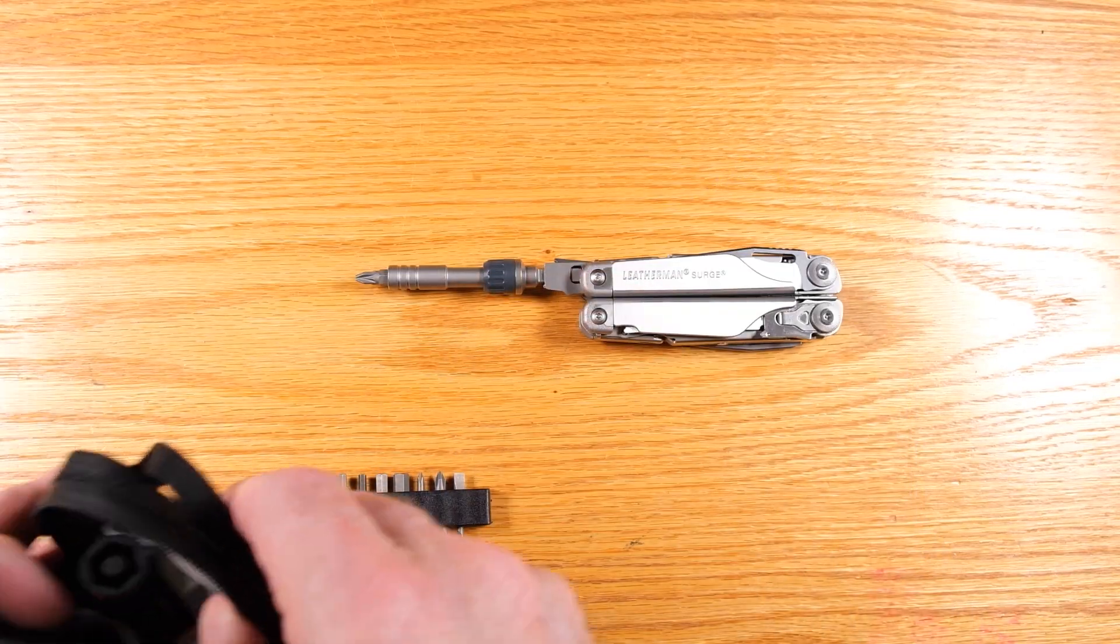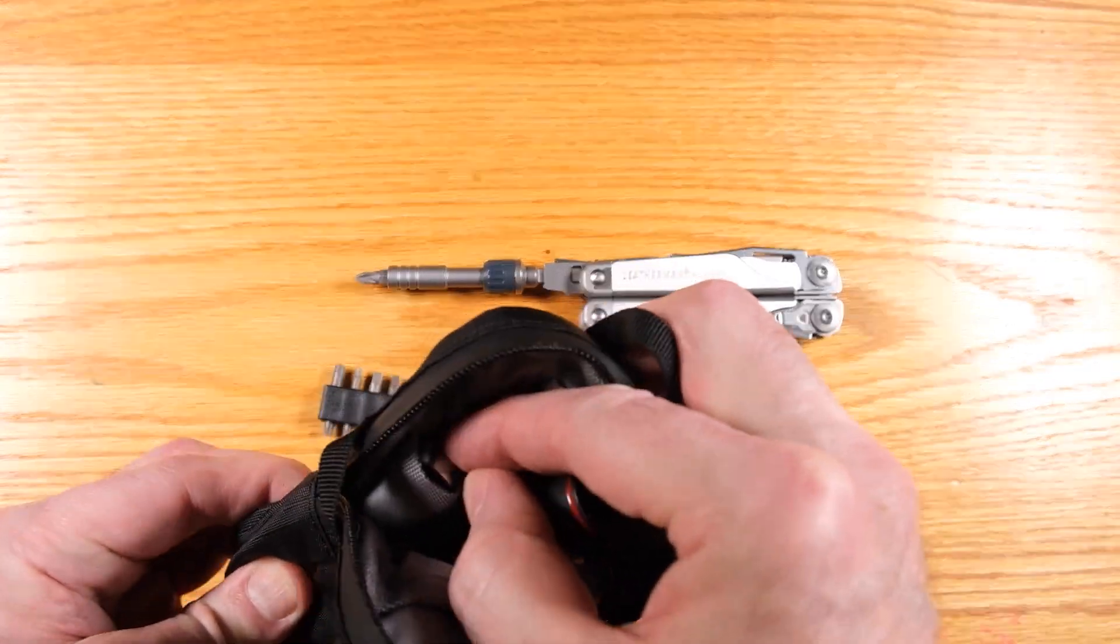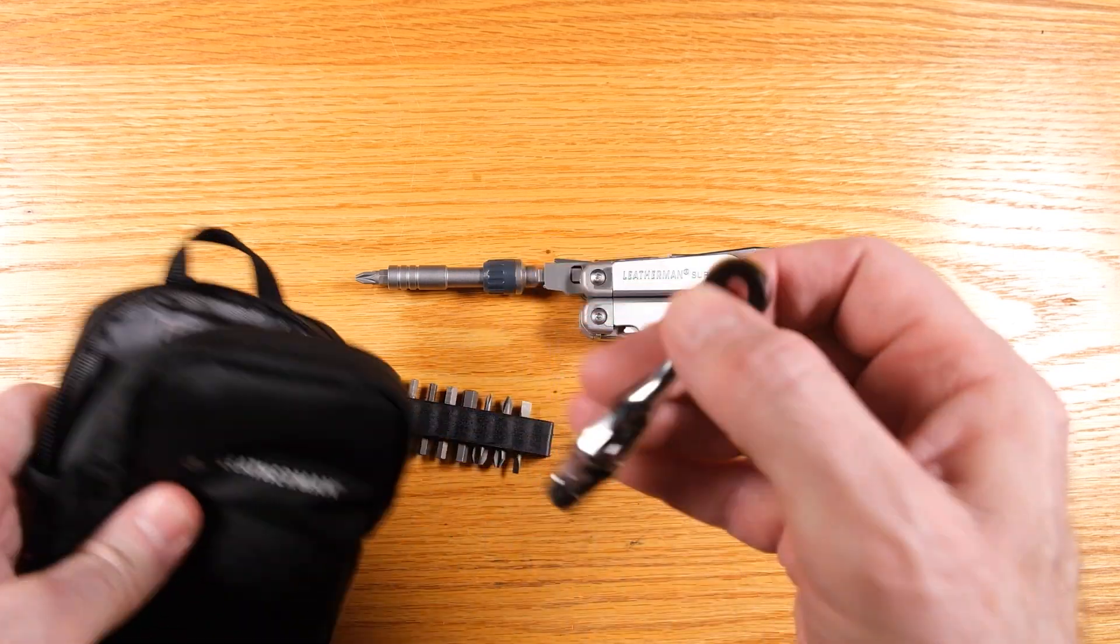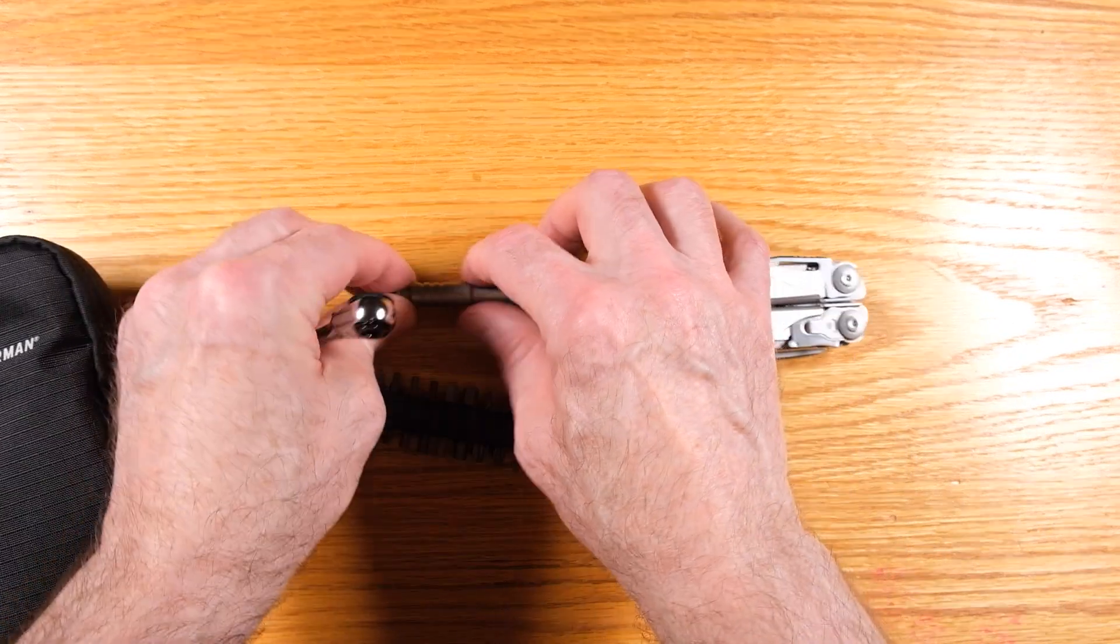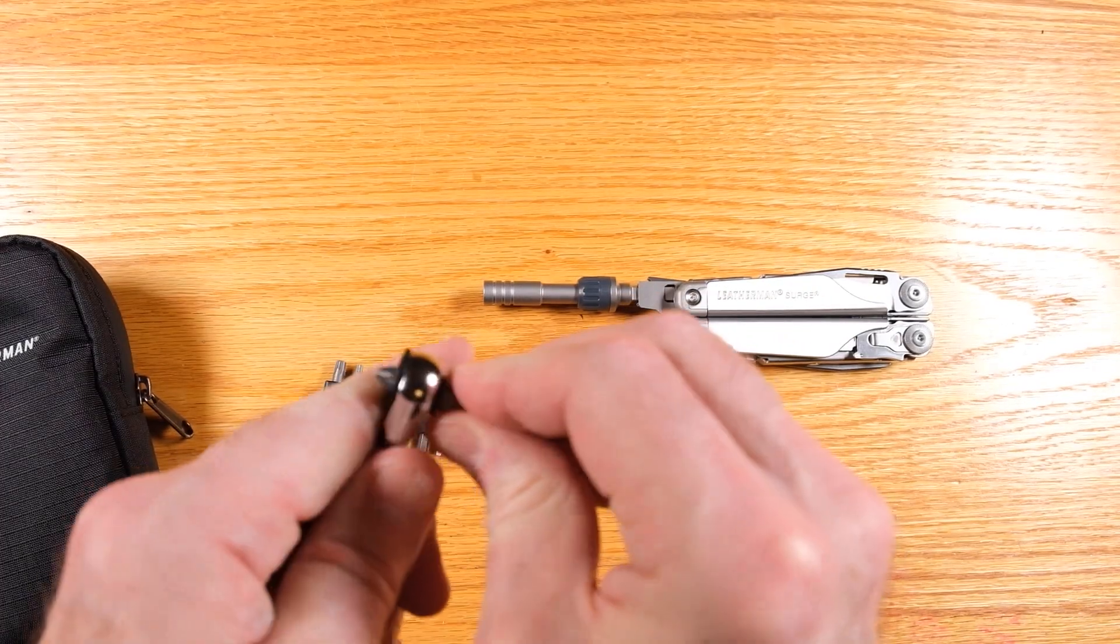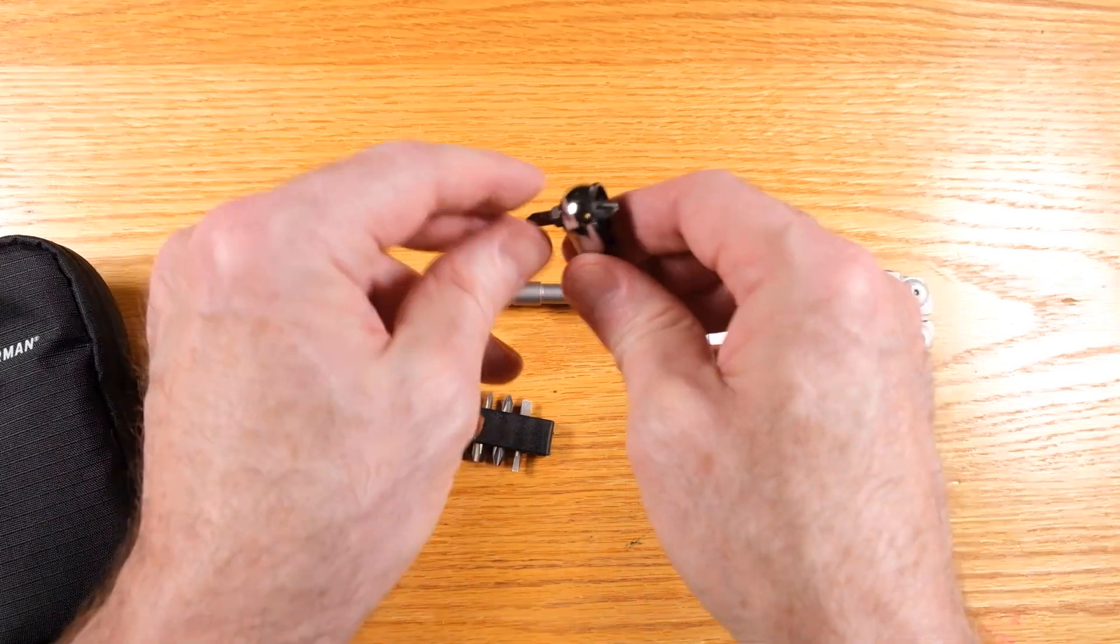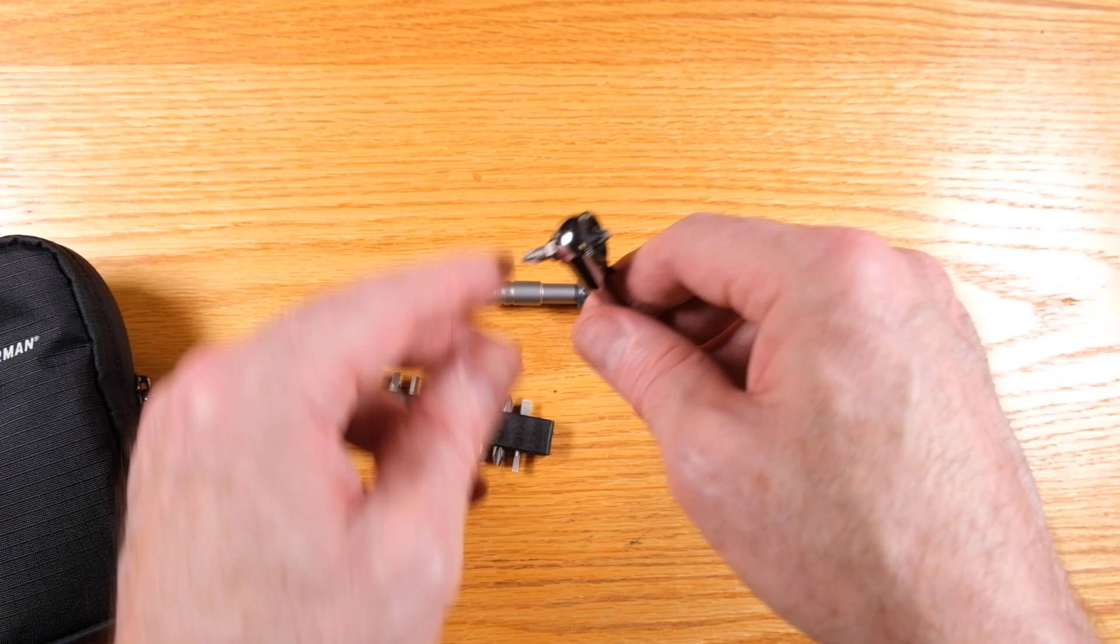Now, the other thing that I have in here is there's actually a little Weeha ratchet wrench. Now, if you need to get in somewhere with one of these bits and you don't have a lot of space, you can put this in the end of this ratchet, or if you want some extra torque, you can use this for that.